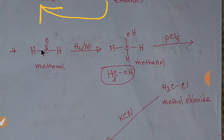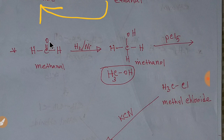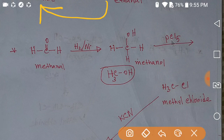When we reduce methanal — which is an aldehyde — by hydrogen in the presence of nickel, we get methanol, which is an alcohol. One hydrogen attaches to the oxygen and another hydrogen attaches to the carbon. Then, if you add phosphorus pentachloride, the chlorine from PCl₅ replaces the OH of methanol, and we get methyl chloride.